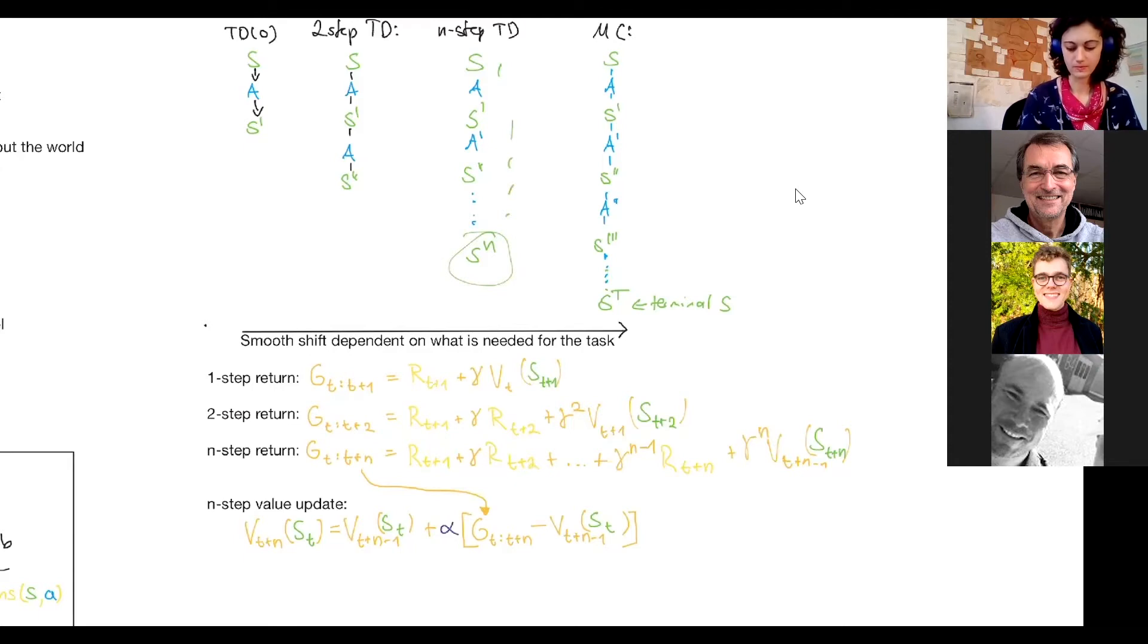Now we look at the next n-state rewards to determine the return and then update the value function using this with the n-step value update. We basically just put this n-step return into this TD error function. Before with TD(0), we just use the one-step return here. Same formula. This again is the TD error. We just use the n-step return now instead of the one-step return.